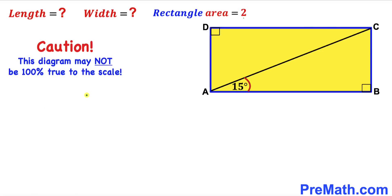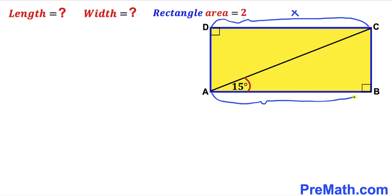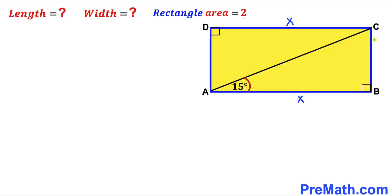Please keep in mind that this figure may not be 100% true to scale. We are going to label the side lengths of this rectangle. Let's assume the length is X units, so both opposite sides are X units. And let's assume the width is Y, so side AD is Y units as well.